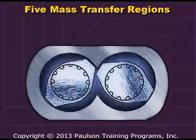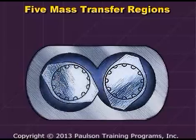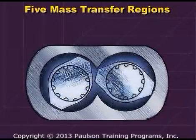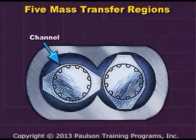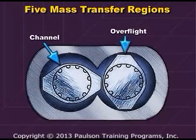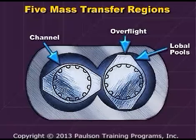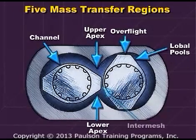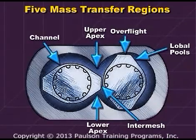Within each screw element there are five mass transfer regions where transfer of the melt takes place. These regions are the channel, the overflight, the lobal pools, the apexes, and the intermesh. We'll look at each of these regions separately.